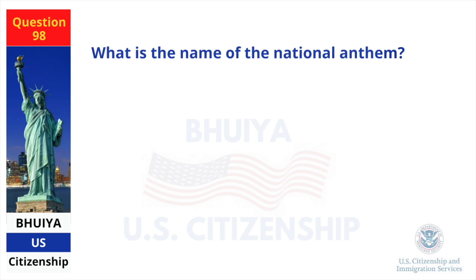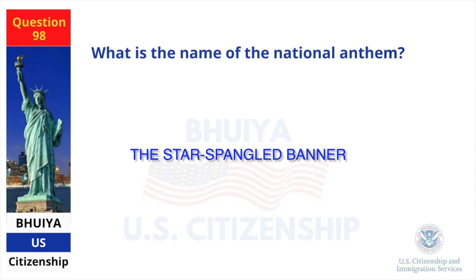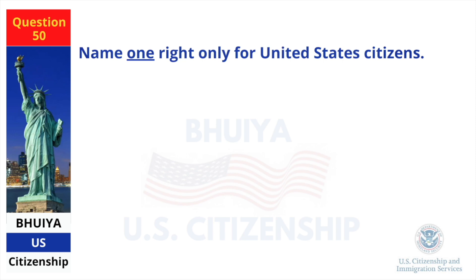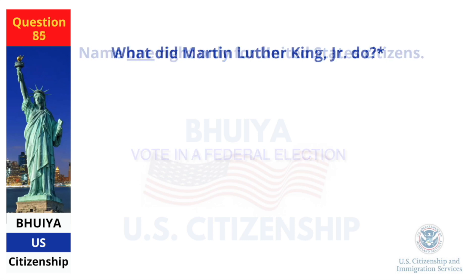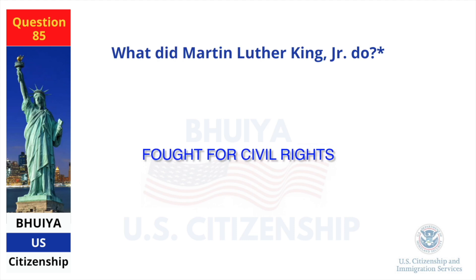What is the name of the National Anthem? The Star Spangled Banner. Name one right only for United States citizens. Vote in a federal election. What did Martin Luther King Jr. do? Fought for civil rights.